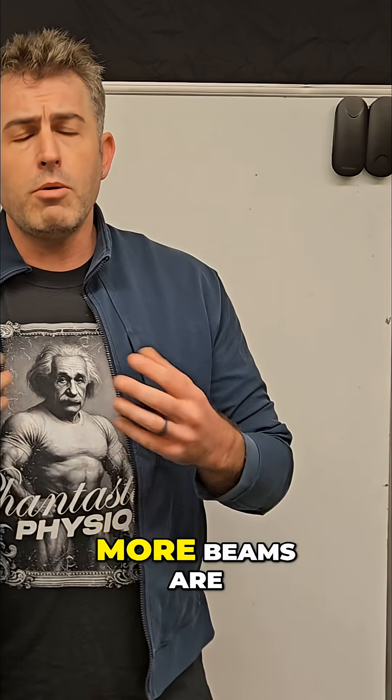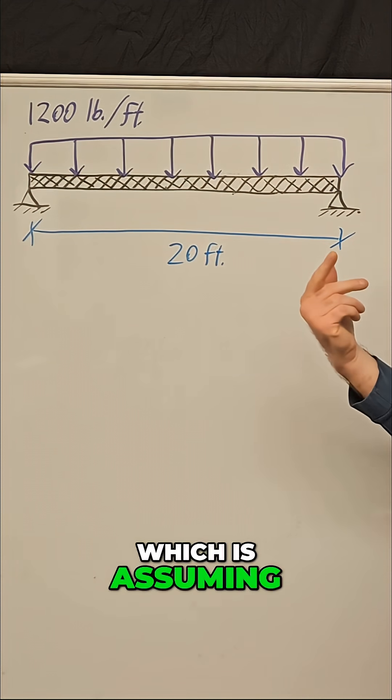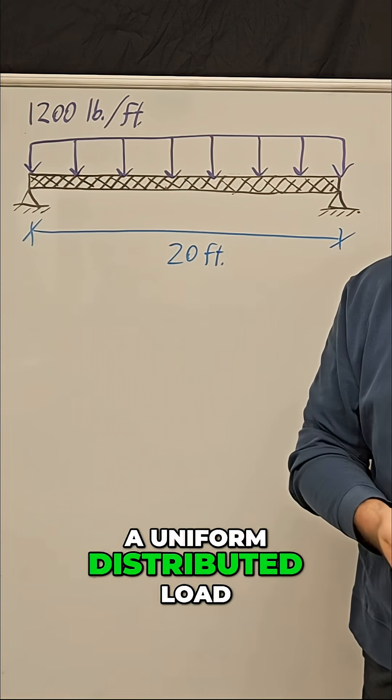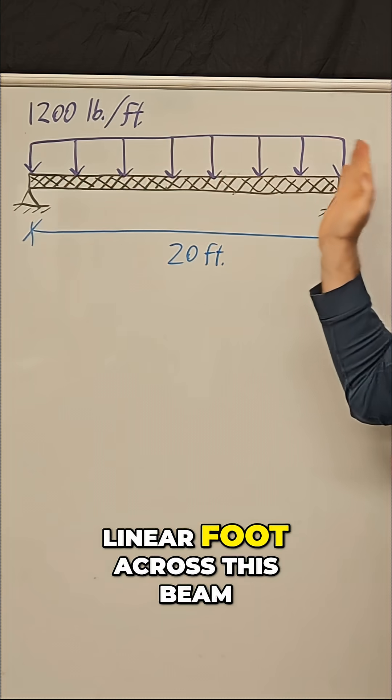But in the real world, more beams are designed with what we call a distributed loading, which is assuming that there's a constant load all across the beam. So this is called a uniform distributed load, and for today's video we're going to use 1,200 pounds per linear foot across this beam.